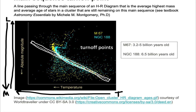Let's take a look at the yellow cluster, M67. As we can see, we have many yellow stars on the main sequence, but then they start to bend off the main sequence.